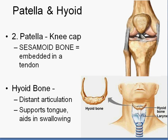The patella is your kneecap. This is known as a sesamoid bone because it is embedded in a tendon. There are two tendons: the quadriceps tendon, which holds the kneecap from above, and the patellar tendon, which holds the kneecap from below and attaches on the tibia down here.